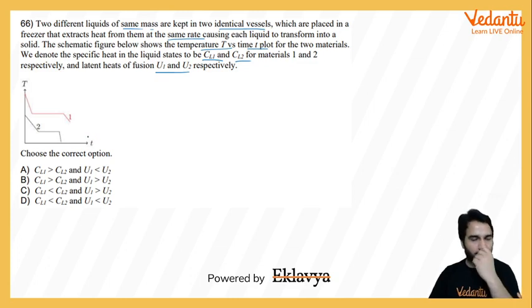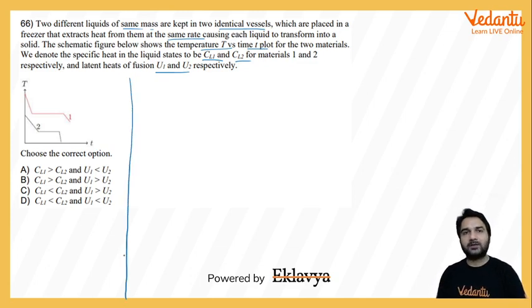Basically, we have to look at this graph and see how these quantities are related. Now observe. If we talk about the same state of material and its temperature variation, then the amount of energy extracted or energy provided is given by this equation: delta Q = mC delta T.